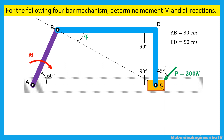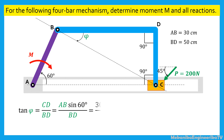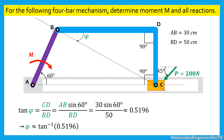Considering the triangle BDC, the tangent of phi is equal to CD divided by BD. We also have CD equal to AB sine 60 degrees. Hence, the tangent of phi is equal to AB sine 60 degrees divided by BD. The tangent of phi equals 30 sine 60 degrees divided by 50, or 0.5196. Consequently, phi is equal to arctan(0.5196), or 27.46 degrees.